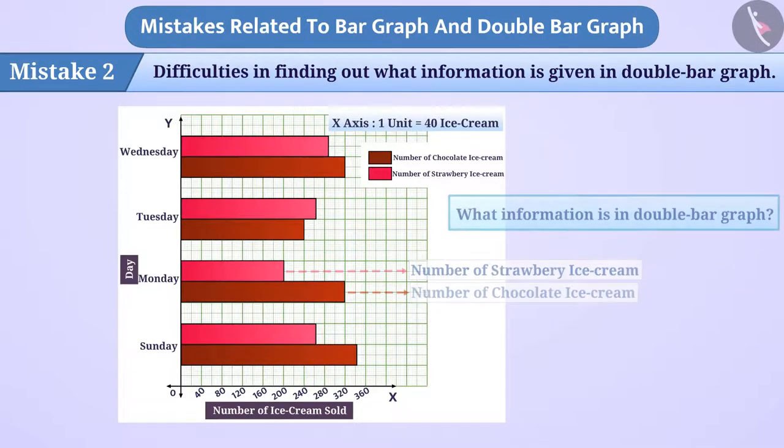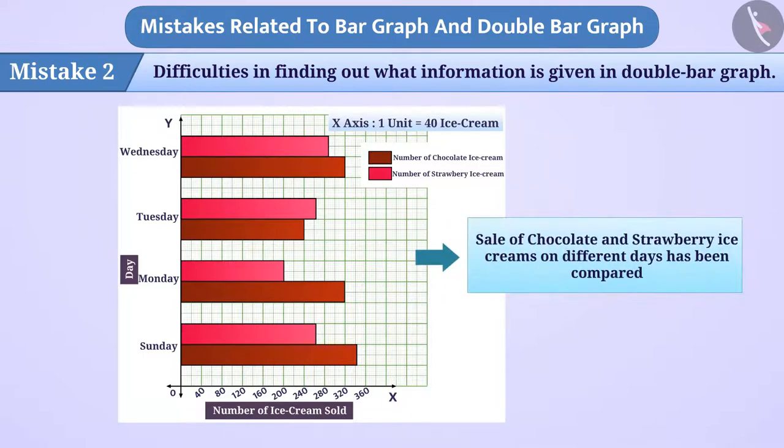With this understanding, we can say that sales of chocolate and strawberry ice creams on different days have been compared in this double bar graph.